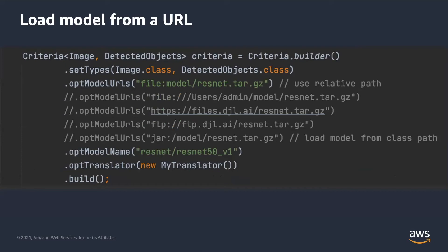To load a model from a URL, when you specify a model URL or model file path, filters will be ignored. A model usually contains multiple files, so in the current implementation, the URL must point to an archive file. The file extension has to be .zip, .tar, .tgz, .tar.gz, or .tar.z. DJL will download the file and unzip it into the cache folder automatically, so be sure you have access to the cache folder. Documentation on how to change the cache folder is available on the DJL website.